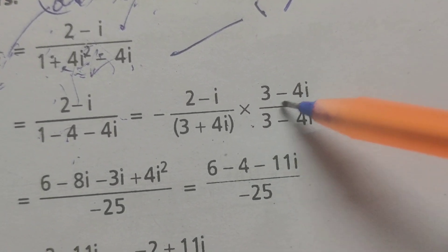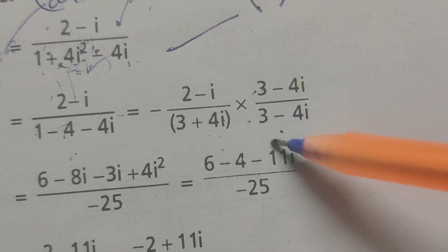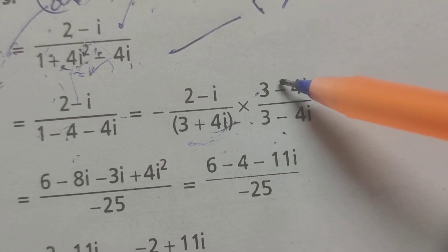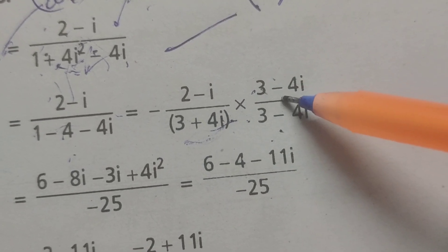Now rationalize the numerator and denominator. Take the opposite sign of 3+4i, which is 3-4i, and multiply by it in numerator and denominator.